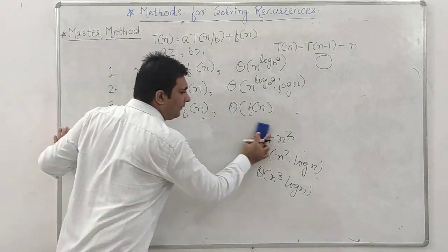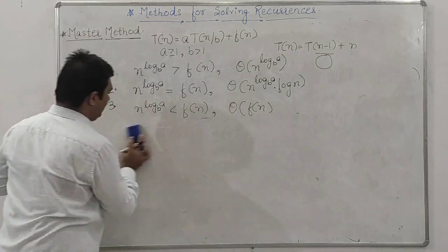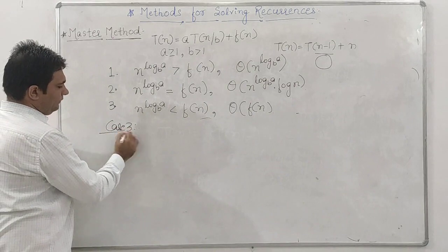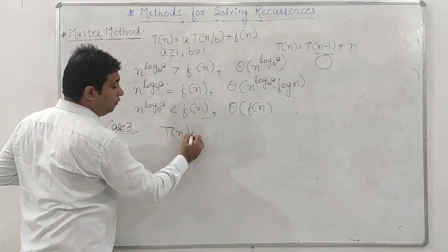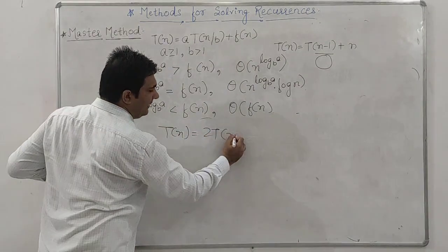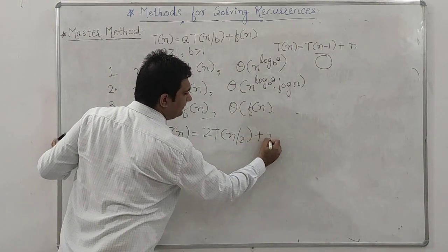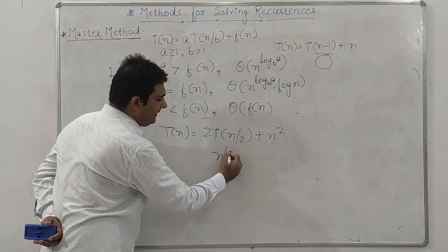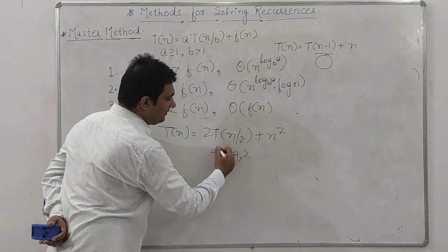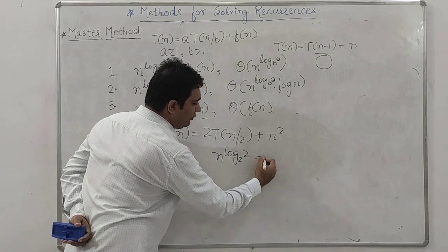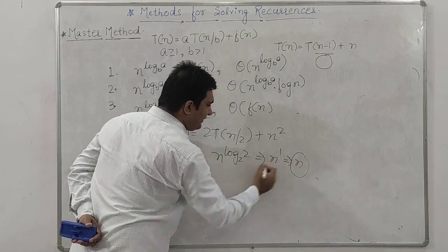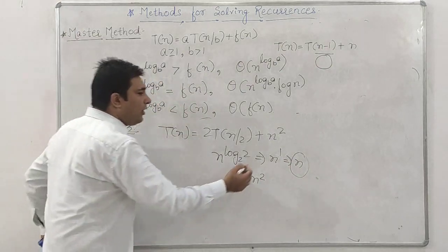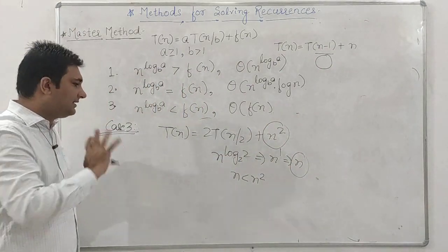Case 3 examples: T(n) = 2T(n/2) + n^2. Here n^(log_2(2)) = n^1 = n, and n is less than n^2. So the complexity is Theta(n^2) as per Case 3. Another: T(n) = 4T(n/2) + n^3. Here n^(log_2(4)) = n^2, which is less than n^3, so complexity is Theta(n^3).